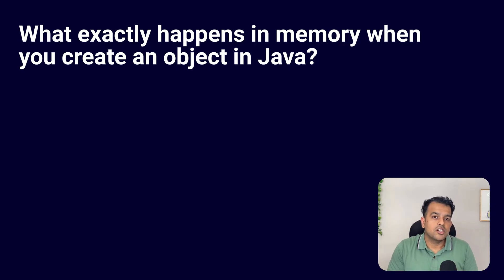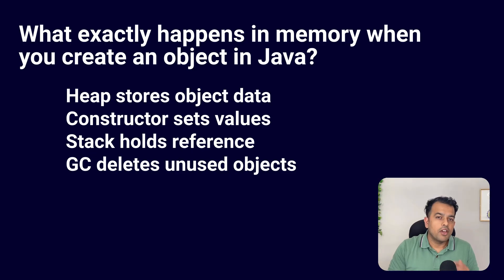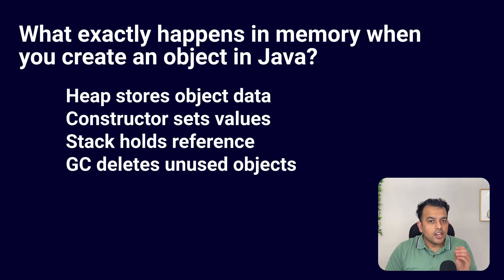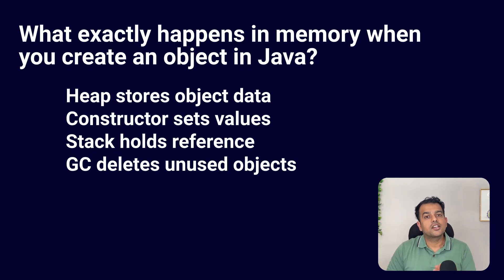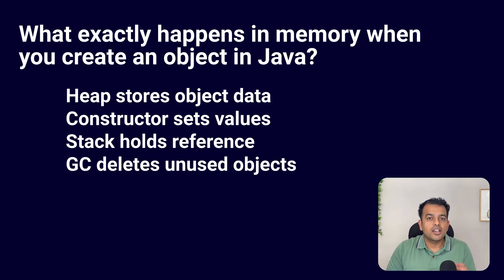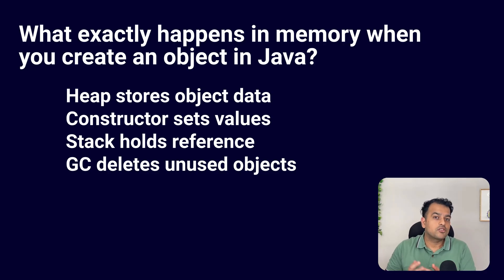To answer this question, you can say: when we write the new keyword, JVM allocates memory for the object in the heap area. It also initializes the instance variables with default values, then the constructor runs and sets custom values. A reference to this object gets stored in the stack area. If the object is no longer reachable, the garbage collector cleans it later. Stack holds references; heap holds actual objects.